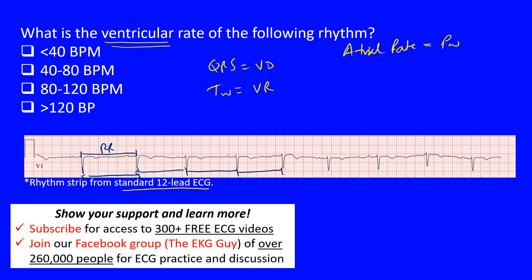Since we have a regular rhythm, we can use two approaches to find the ventricular rate. A standard 12-lead ECG represents 10 seconds from beginning to end. Multiplying that by six gives 60 seconds — one minute. So if you count the complexes going across and multiply by six, it gives you beats per minute.